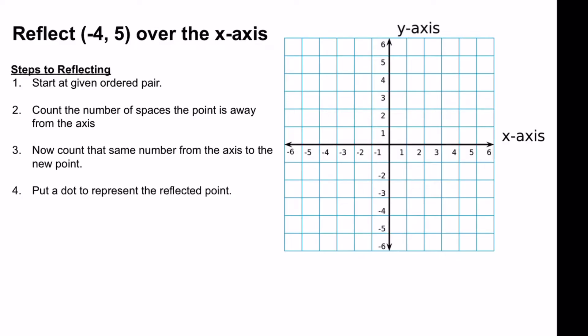Reflect negative 4, 5 over the x-axis. To start, we want to start at the origin, which we know is here in the middle, at ordered pair 0, 0.